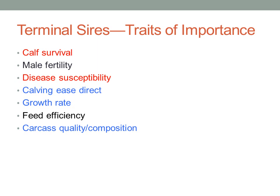As we think about selecting sires, it's important to realize what traits may be terminal or maternal in nature. For terminal sire selection, important traits include calf survival, male fertility, disease susceptibility, calving ease direct, growth rate, feed efficiency, and carcass quality and composition. Virtually every breed association has EPDs for the traits listed in blue; some have EPDs for those in black — male fertility is scrotal circumference; and traits in red don't yet have EPDs but are largely impacted by heterosis from crossbreeding.